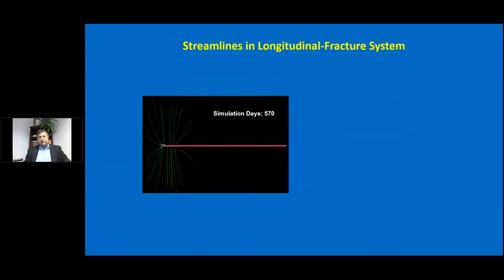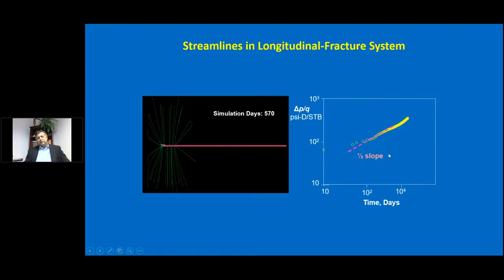What we just discussed presupposes that we have a transverse fracture. But what if we have a longitudinal fracture? This is no fantasy — we encountered this issue when we began completing. When we have a longitudinal fracture, we will not develop the inner slope response that gives us the SRV, because we don't have an SRV per se. That's the problem.